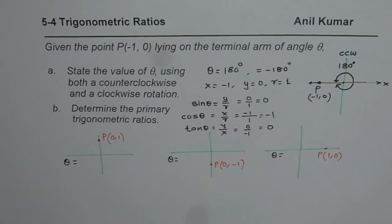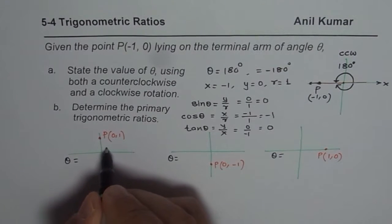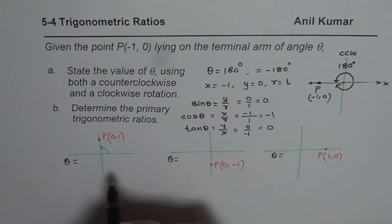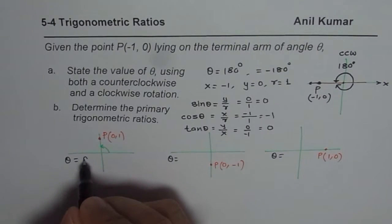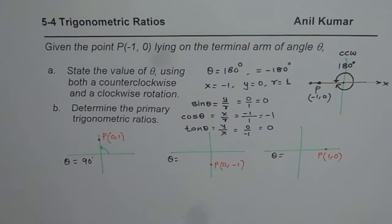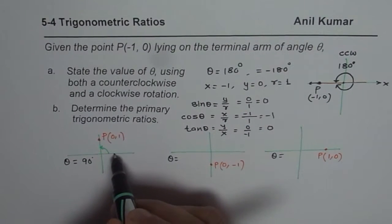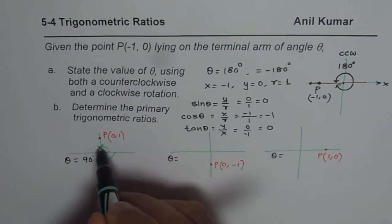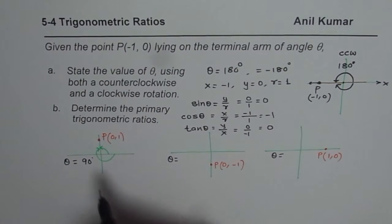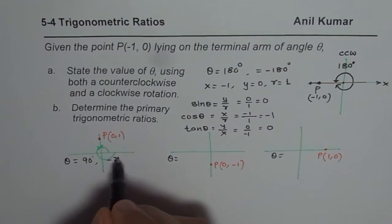If I go counterclockwise, 90 degrees in this case. We write 90 degrees. As far as clockwise goes, it will be negative 270. Do you see that? So that is -270 degrees.